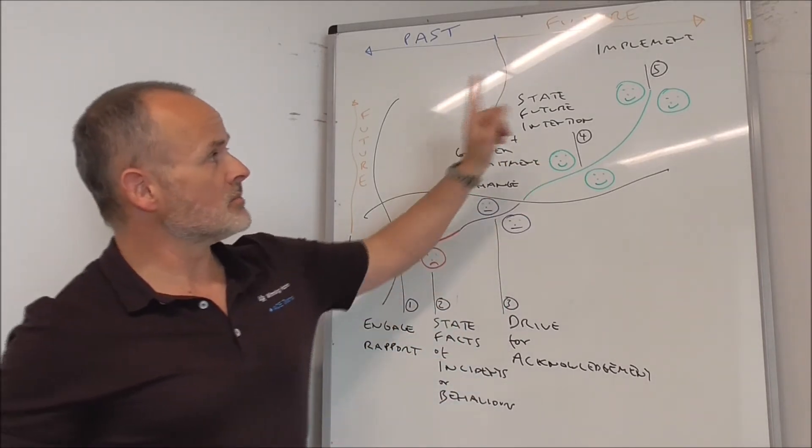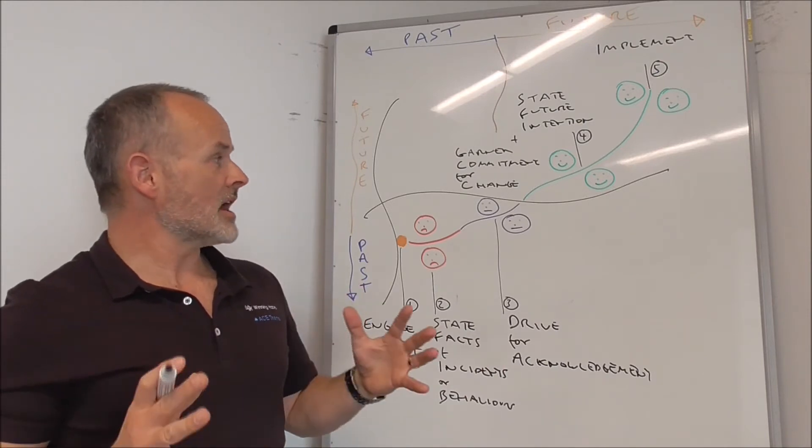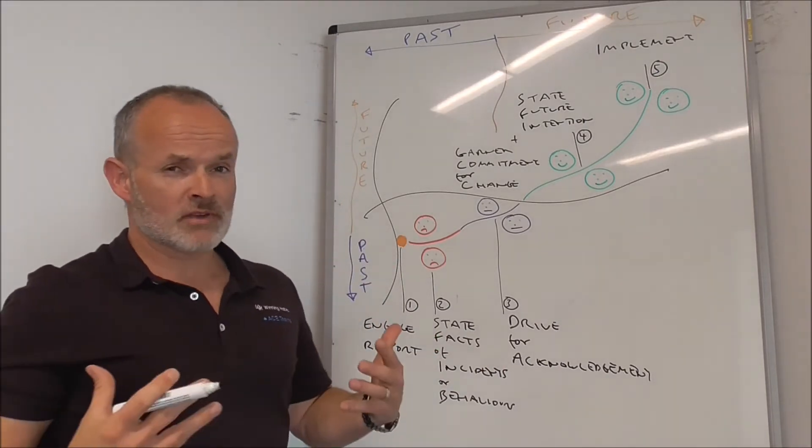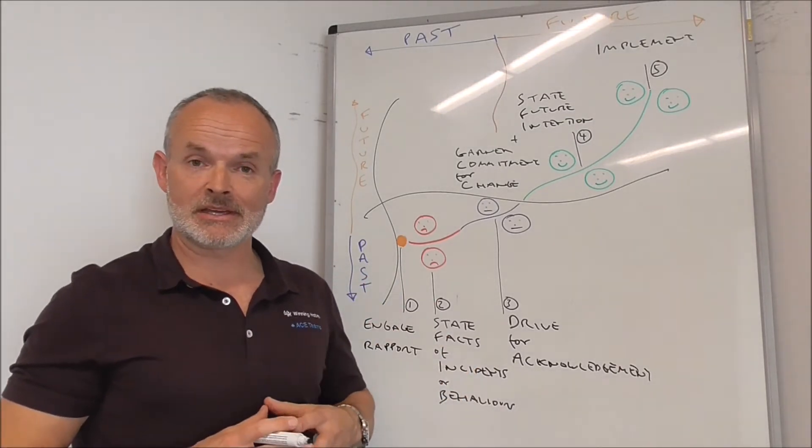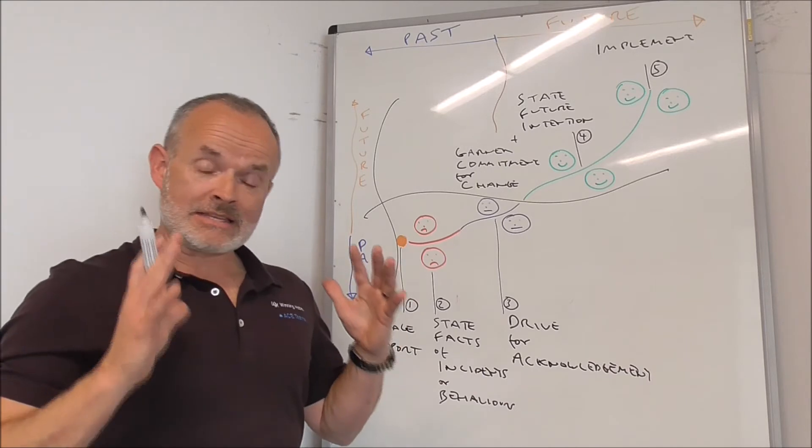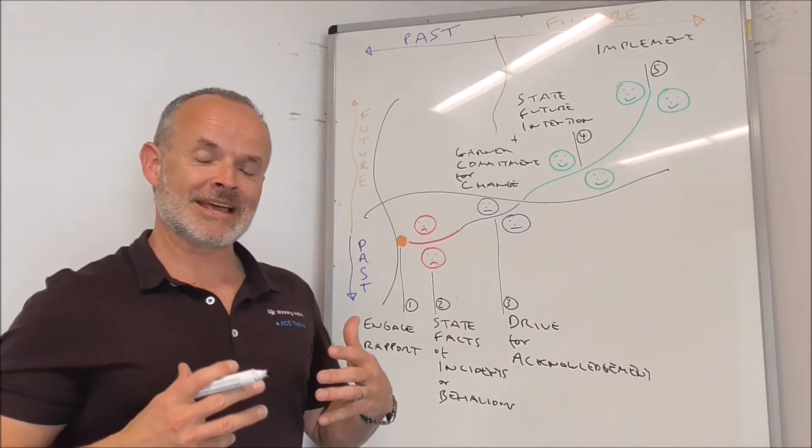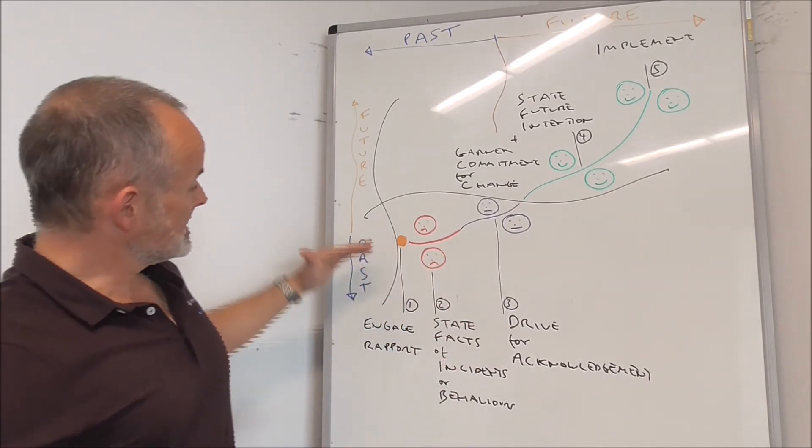And finally, what we must do is Implement. We must enact and commit to the intentions that we state in step four. Without implementation, nothing will really change. So there we have it, there's the five-step model for managing conflict. I was taught this a few years ago and I deploy this in my coaching practice. So take it away today if you're having complexities and if you're in conflict yourself, use the model.